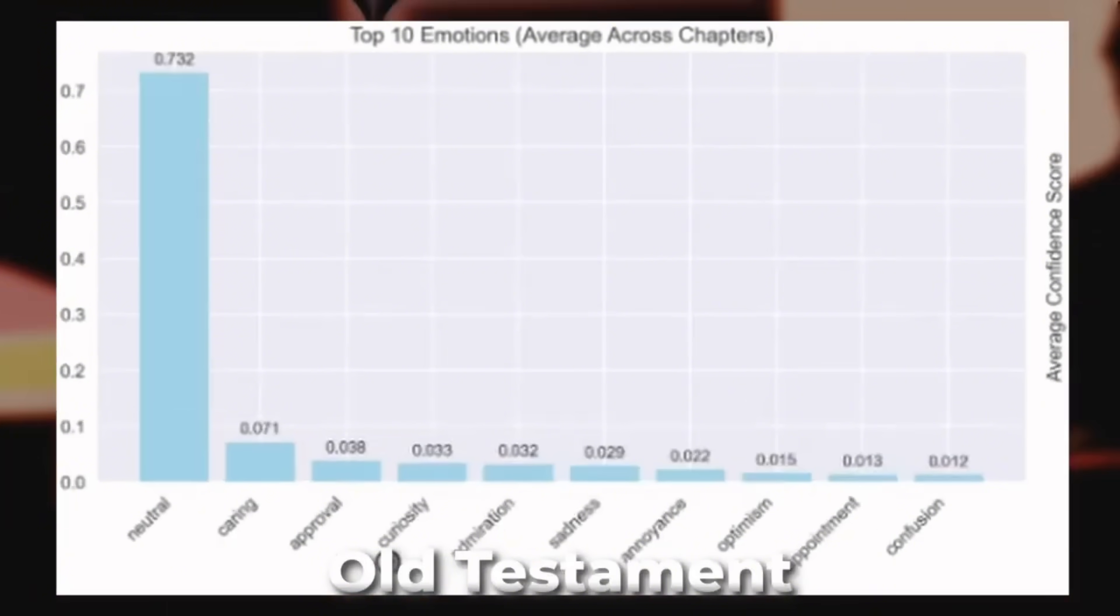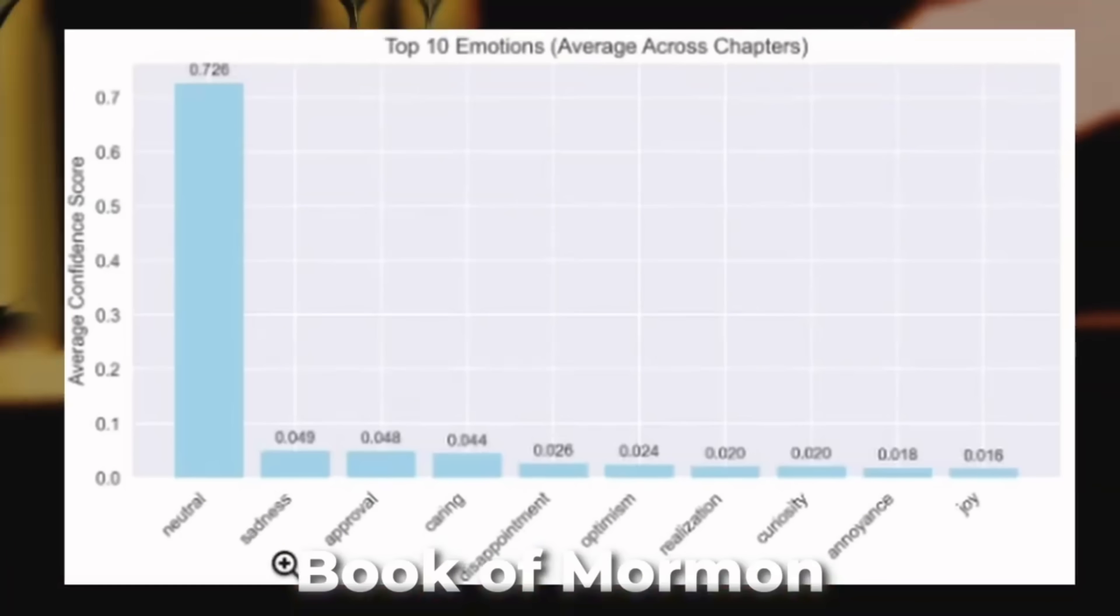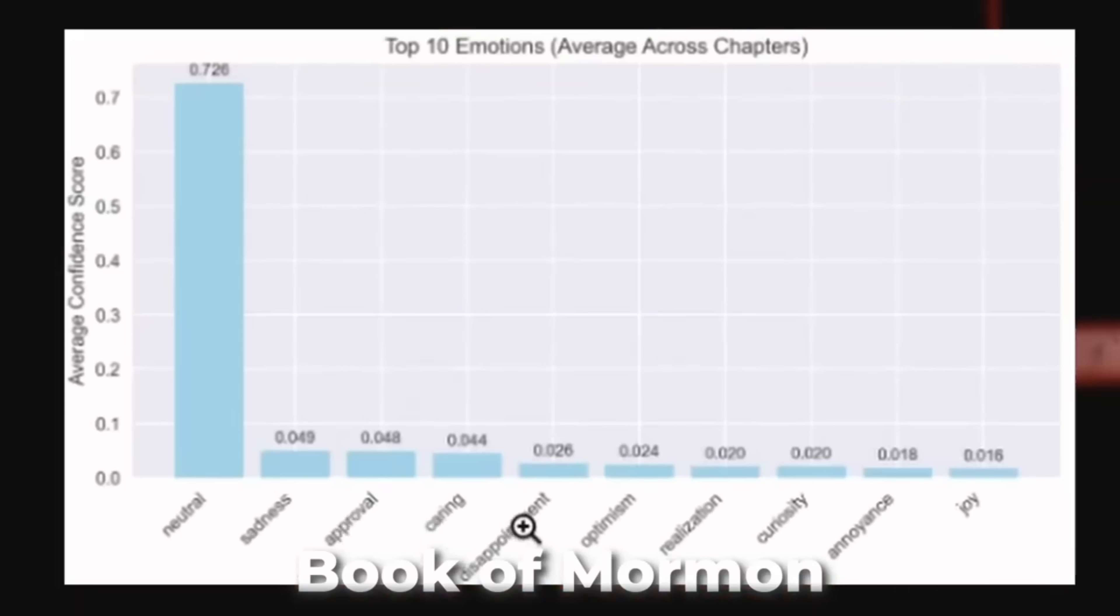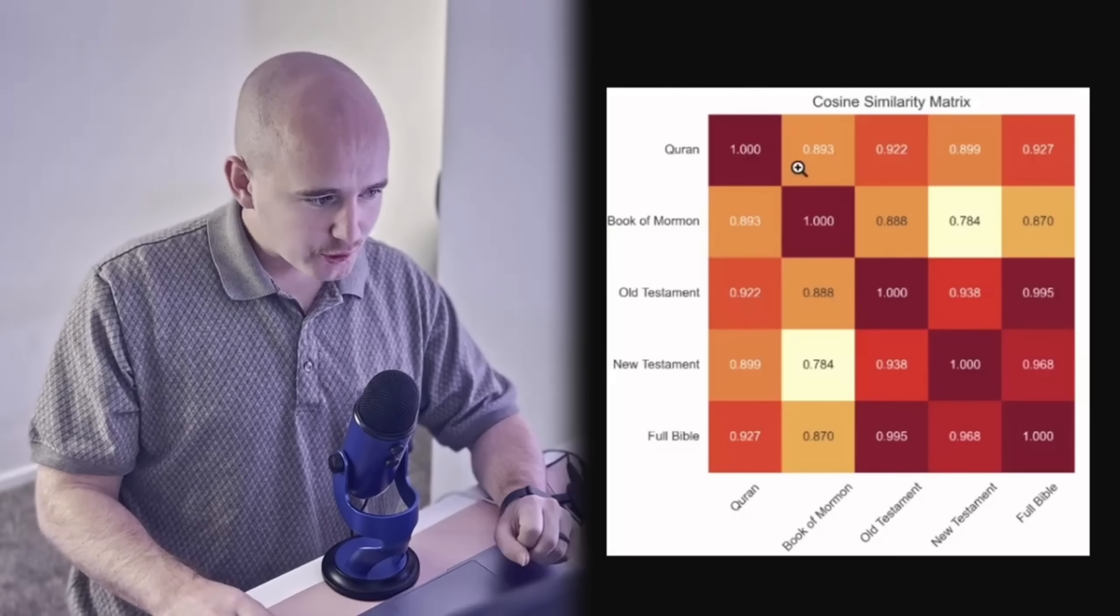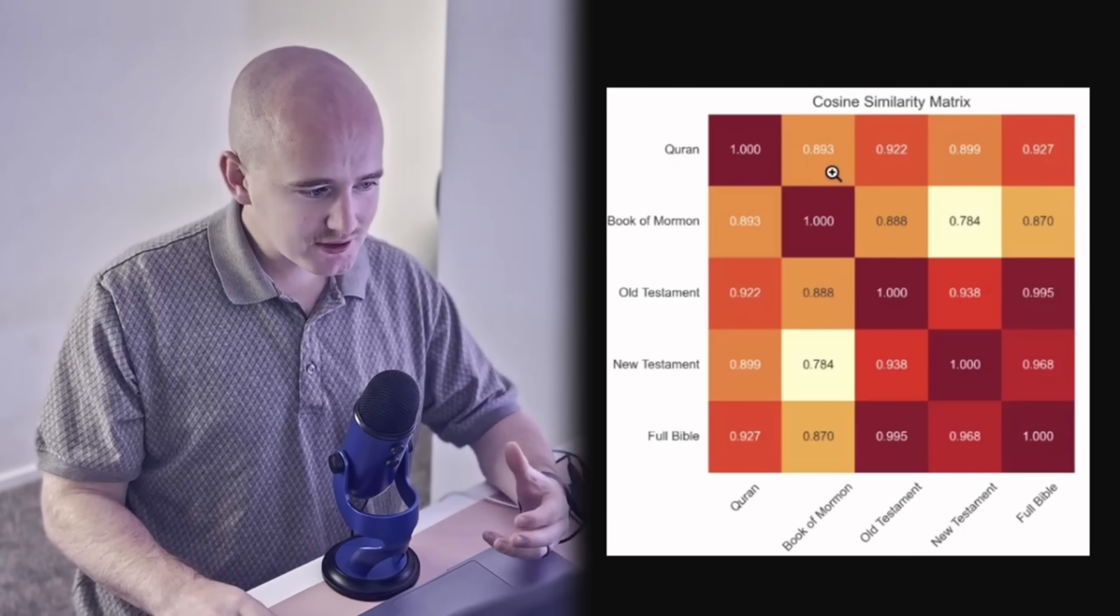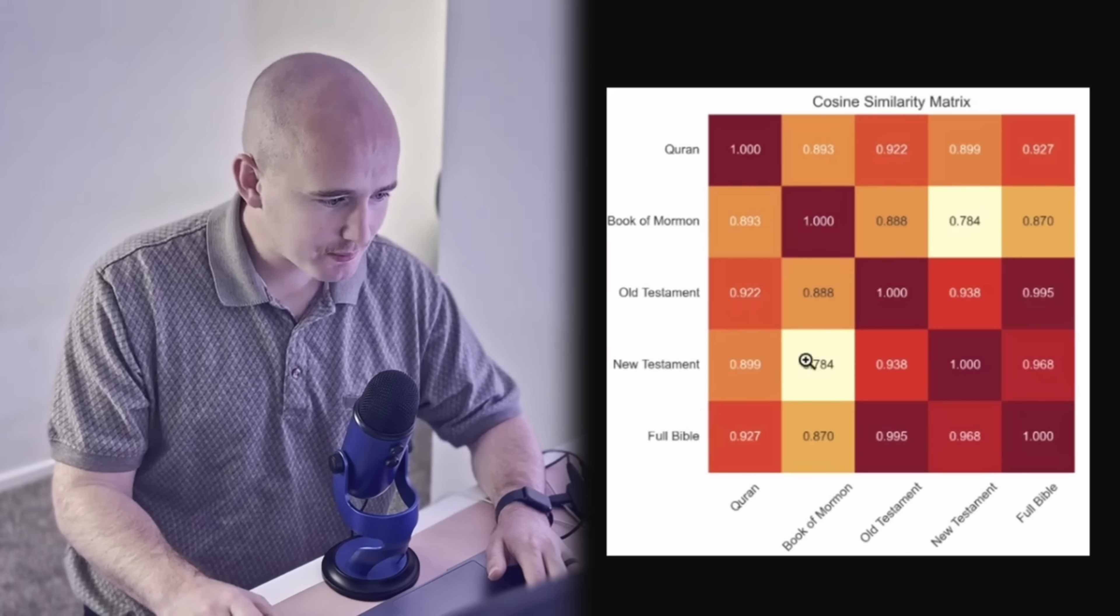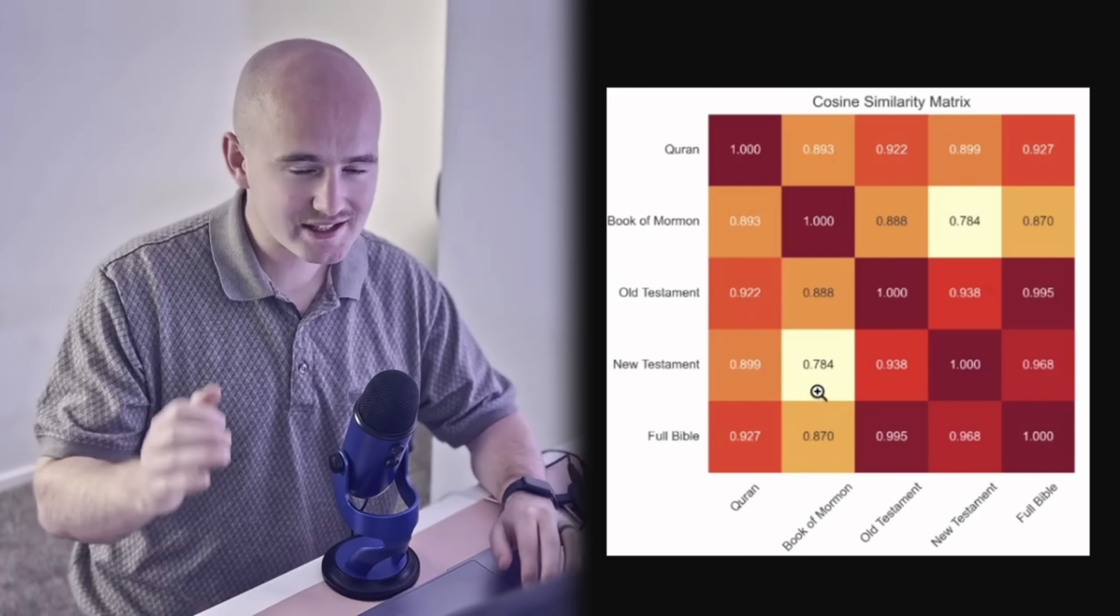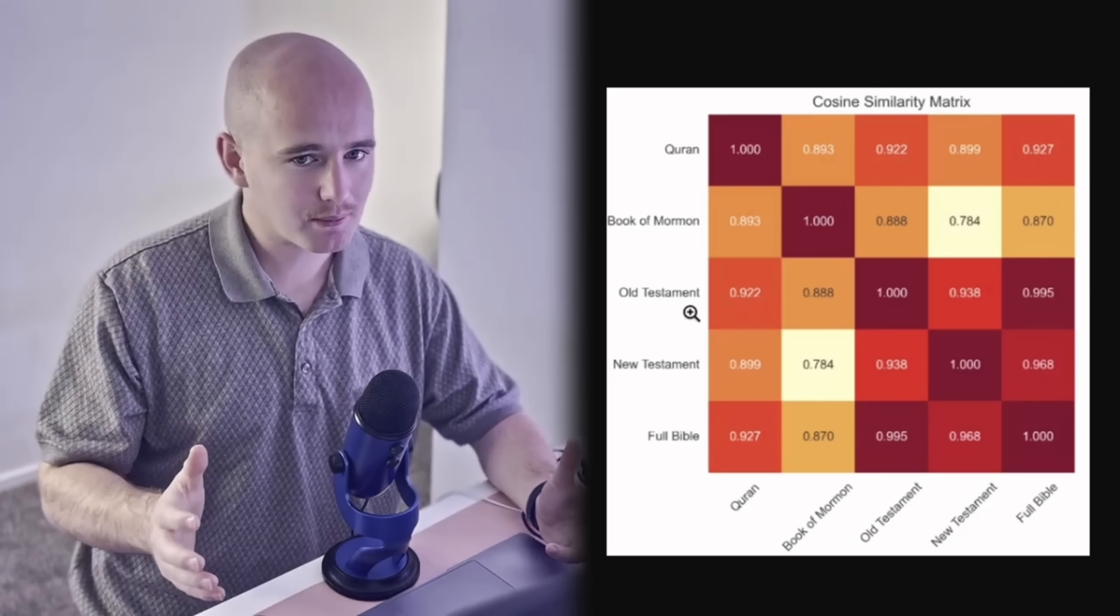You'll see something similar for the Old Testament right here. The New Testament also has similar emotions. But the Book of Mormon actually has different values with sadness, approval, caring, and disappointment being the next ones. Now, how do the emotions compare across all the texts? Well, you can see right here in this heat map that they're actually very similar. The Quran has the most emotional similarity to the entire Bible. But it's also extremely close to the Book of Mormon as it's at 0.9. Then you can see all these other scores. Even the New Testament and Book of Mormon, it may seem low at 0.784, but this is still a very high score.